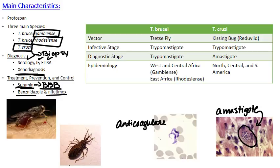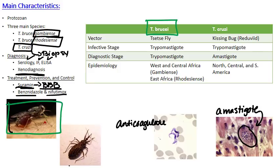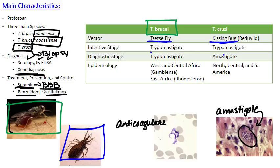So let's go back to how I normally go through a parasite. We're going to start with the vectors. These are arthropod vectors for both species. The tsetse fly — shown here with a full belly of blood — is the vector for both T. brucii subspecies, both gambiense and rhodesiense. For T. cruzi, it's the kissing bug, or the reduviid bug, which is a much bigger bug. The infective stage is the same for both: the trypomastigote, shown here in this blood smear.